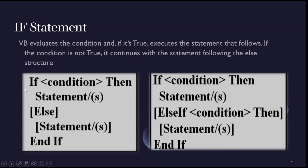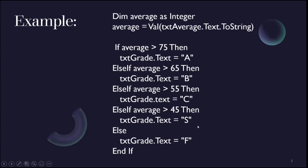For this example, we have a condition and an else part. If we will put a specific condition, we must use an else if instead of an else. Here is an example: we declare a variable average as integer and we will get the text average.text.toString and put it in our variable average.